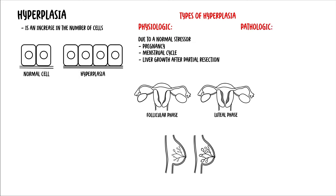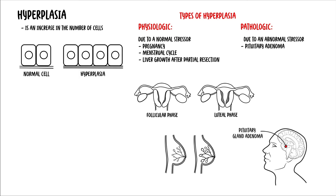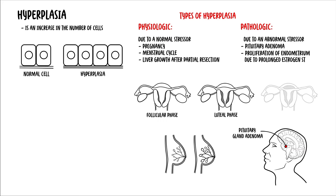Pathologic hyperplasia occurs due to an abnormal stressor. For example, growth of the adrenal glands due to production of adrenocorticotropin hormone by a pituitary adenoma, and proliferation of the endometrium due to prolonged estrogen stimulus.